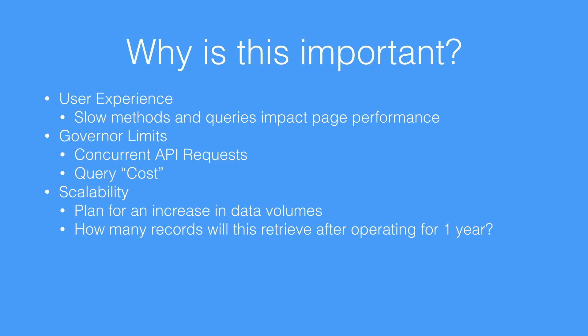Secondly, governor limits are obviously in place for the system. The first governor limits you might know about are the different concurrent requests, API limits, and number of rows you can retrieve. But one of the things we'll discuss in future videos is the idea of query cost. Salesforce has a query plan tool we'll be reviewing in upcoming videos, and with each query there's an associated cost value — if you pass a certain cost value, the query does not get run for you.